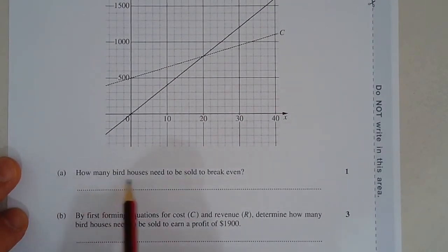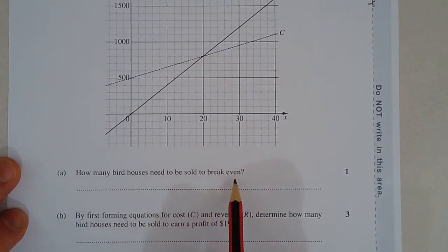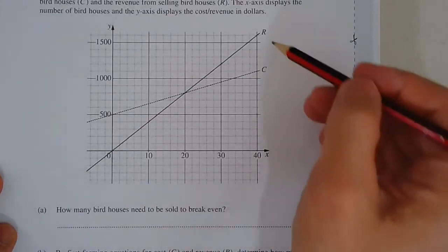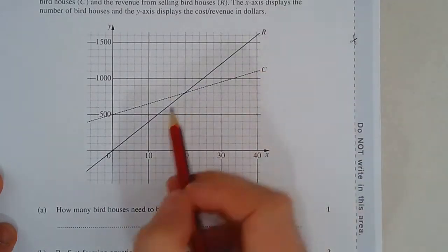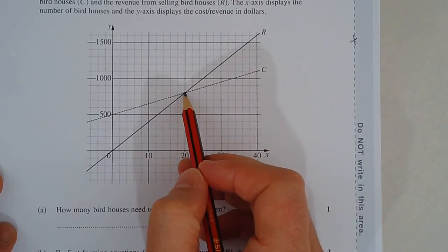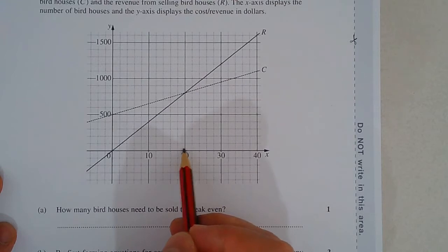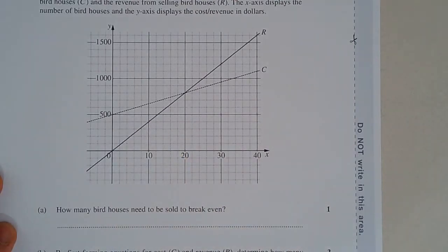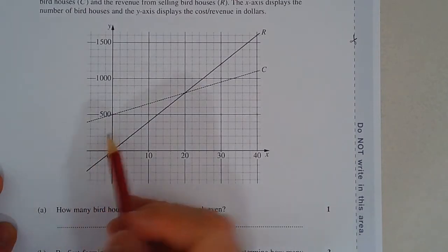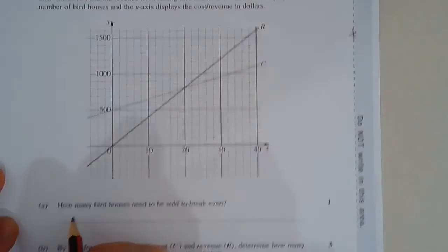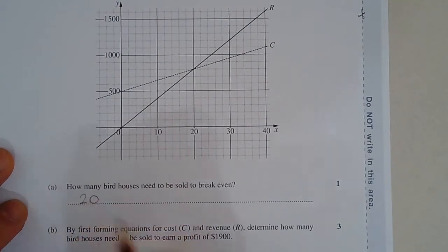Part A. How many birdhouses need to be sold to break even? So this is where the revenue equals the cost. So just find where they intersect, project down to the x-axis, and we can see here that 20 birdhouses need to be sold in order to break even. Break even means you're not making a loss or a profit. So the answer is 20.